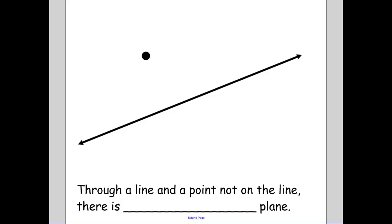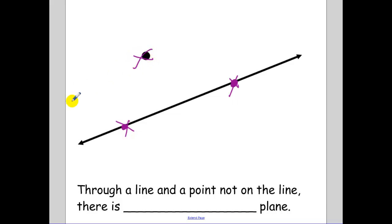Through a line and a point not on the line, how many planes go through those? Here's a justification: we know we need at least two points on the line, and with the external point, that gives us three points. Those three points mean there is exactly one plane that goes through all three of them.